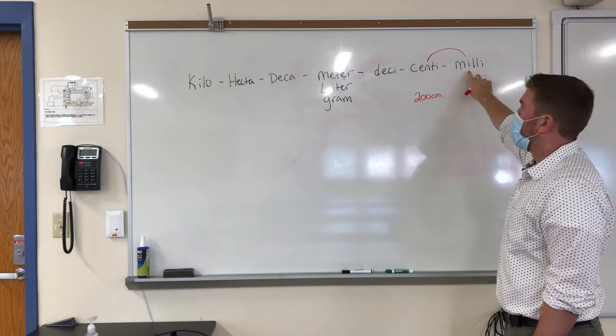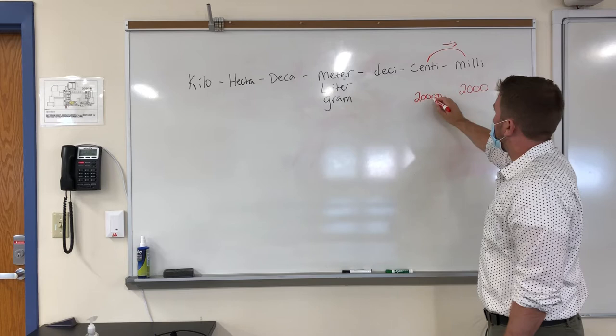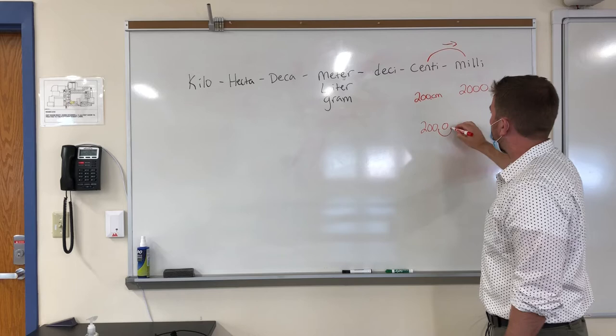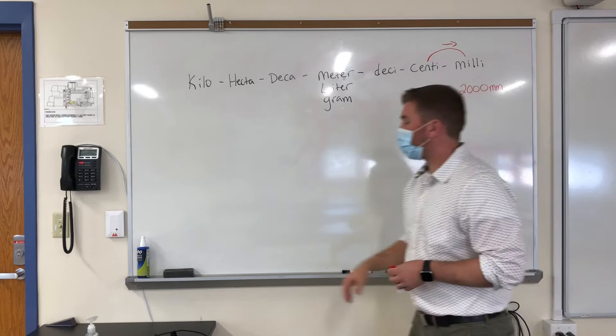I look at the direction that I jumped — it's one space to the right. If I move one space to the right, I move my decimal point, which would be right here, one place to the right. So 200 decimal, one spot to the right — wherever there's a gap I put in a zero — and I end up with 2,000 millimeters.